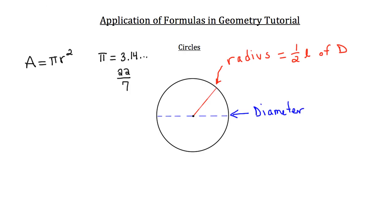You can use 22 over 7 as a fraction instead of the decimal 3.14 when that's faster. Later on, some teachers may allow you to leave your answer in terms of pi — for example, as 25pi units — which is a clean, exact way to express the answer. So the area of a circle equals pi times the radius squared.